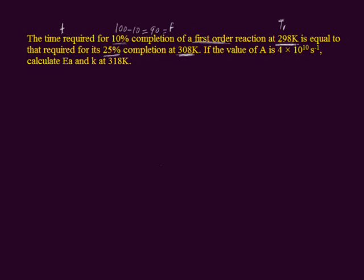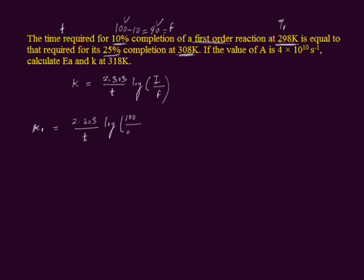Since the reaction is of first order, we apply the first order formula: K equals 2.303 divided by time T, log of initial amount divided by final amount. For this reaction, the rate constant is K1 equals 2.303 divided by T, log of 100 divided by 90. Dividing gives 1.111, so K1 equals 2.303 over T multiplied by log 1.111, which equals 0.0457. This is the first equation.